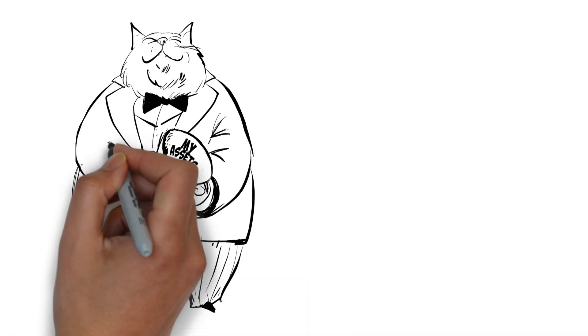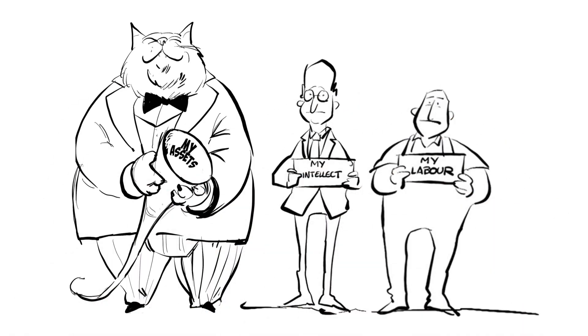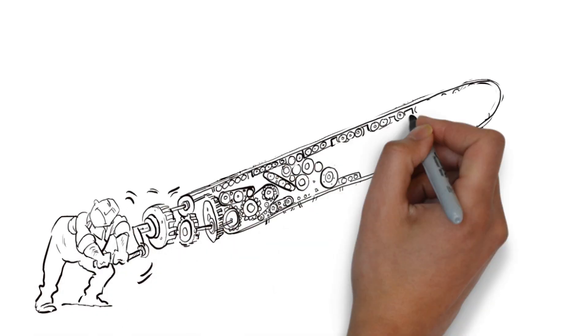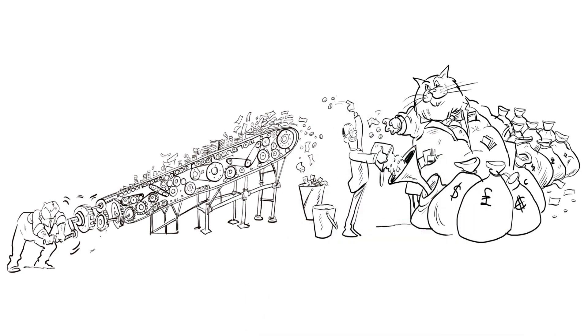The present economic system is based upon the class ownership of the means of living. It's not geared to meeting our needs but to making profits for those who own the world's resources.